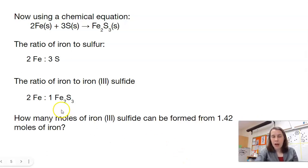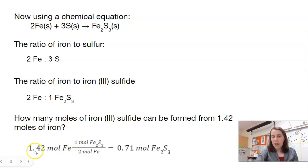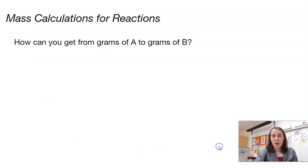So if we have 1.42 moles of iron, how many moles of iron(III) sulfide can we make? This will be set up similarly: 1.42 moles of iron in the front, and our ratio of iron to iron(III) sulfide is 2 to 1. Then we do the math: 1.42 times 1 divided by 2 gives us 0.71 moles of Fe₂S₃.